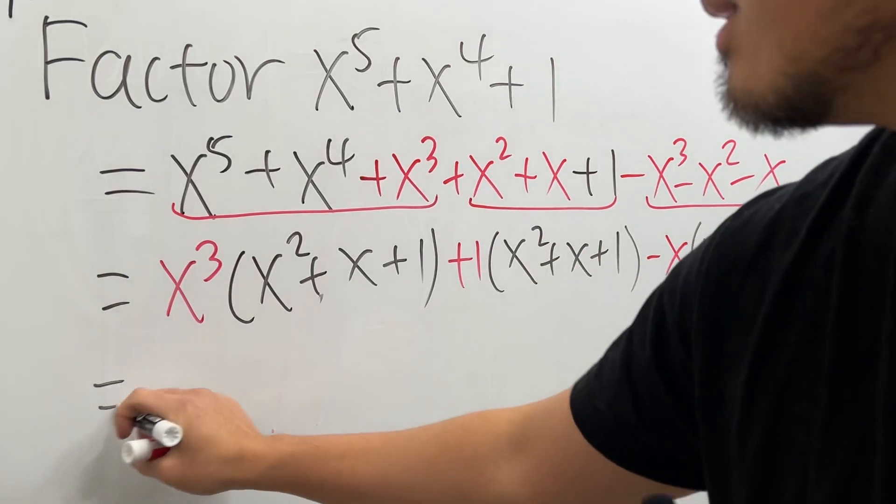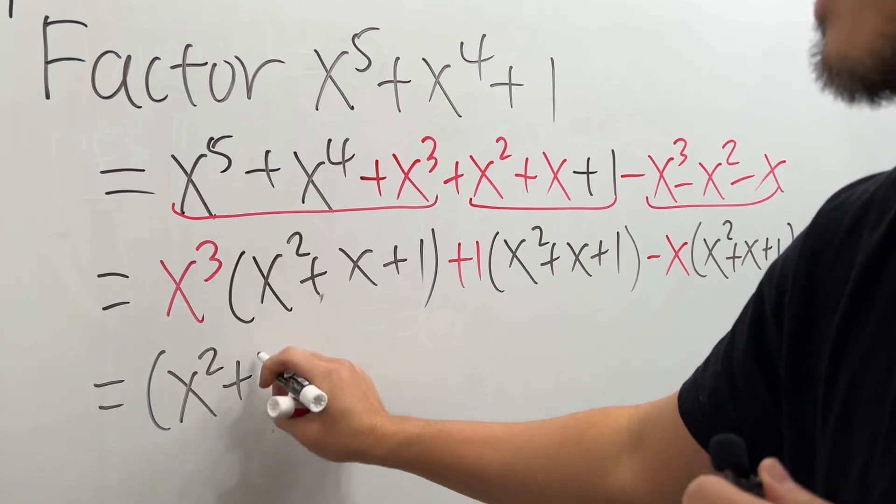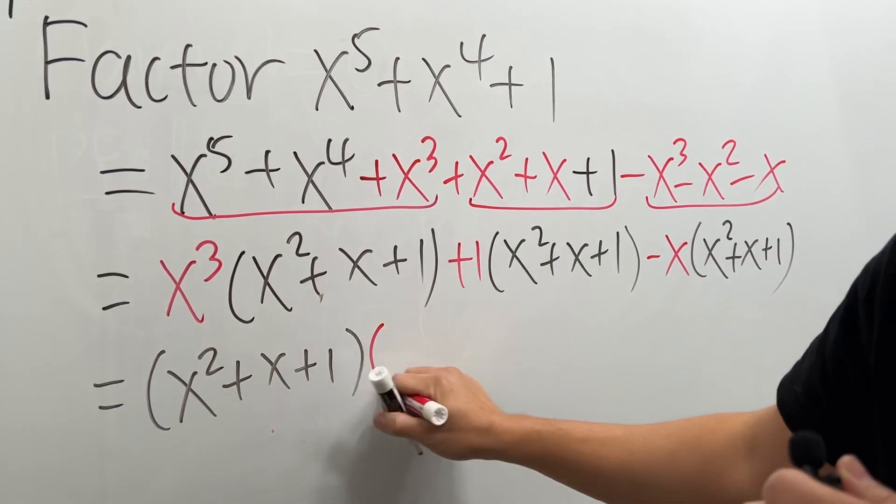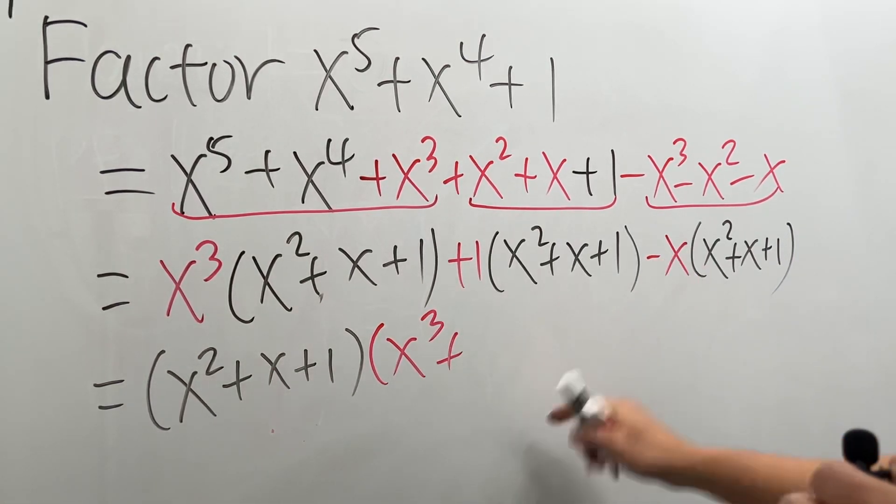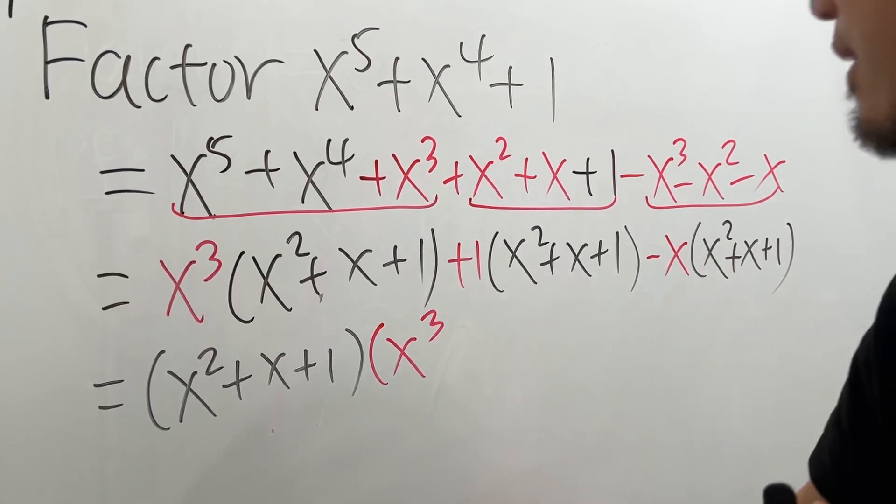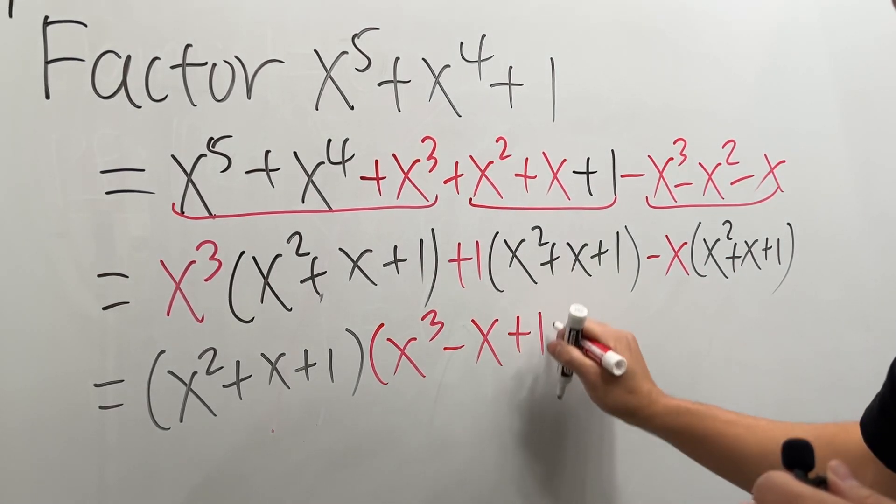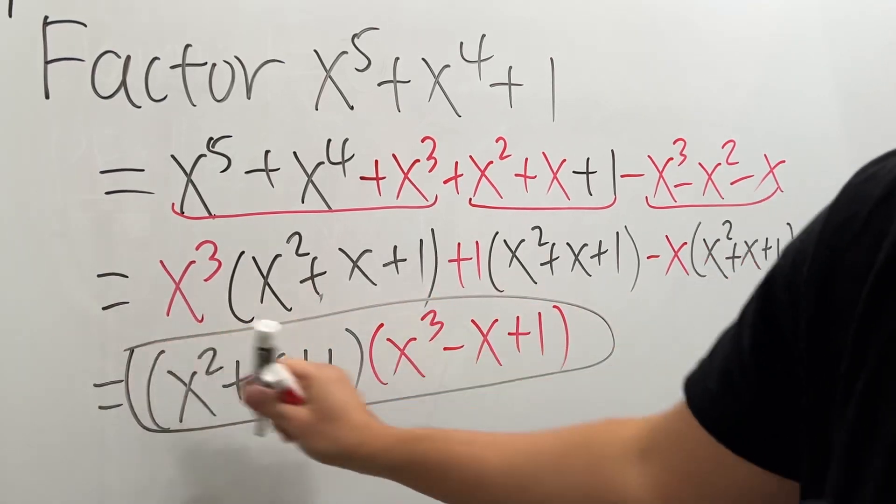So you see all the parentheses in black are in common. So we can factor out x squared plus x plus 1 times x to the 3rd plus... Well, let's write down the negative x next. Negative x and then plus 1. And then we are done.